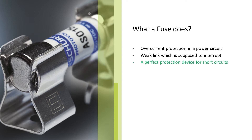A typical short circuit generates at least 10 times rated current to the fuse and to the whole power circuit. The fuse is a fantastic protection device against short circuits — 10 times rated current. It interrupts in a very accurate and short time frame, and therefore it is a very safe protection device.